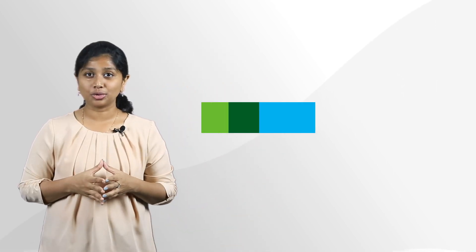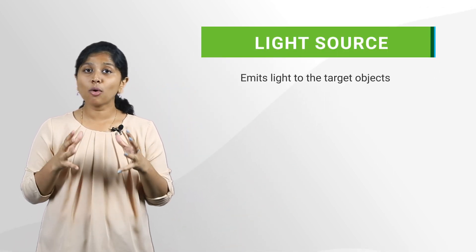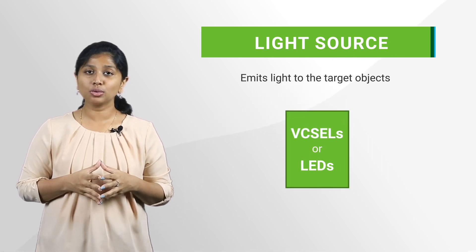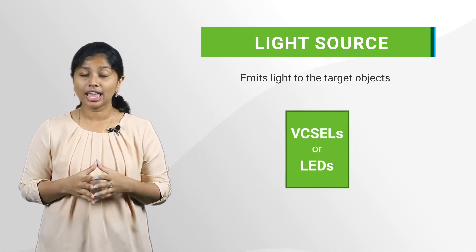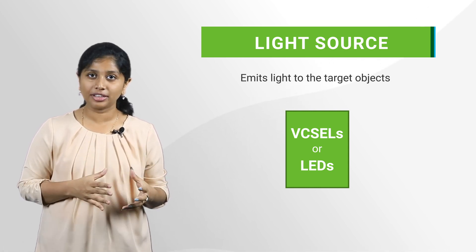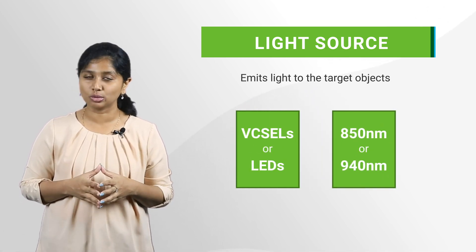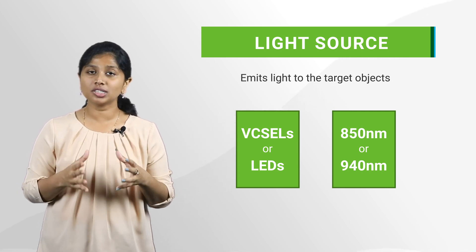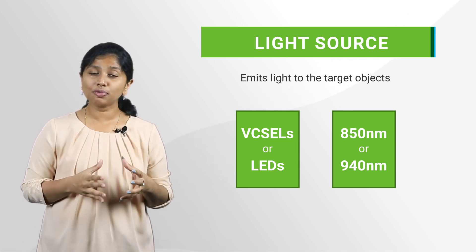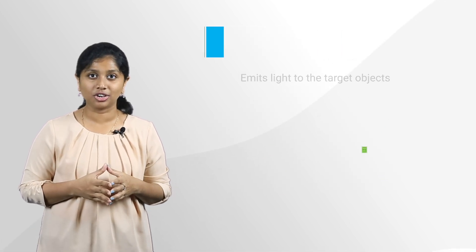The next component of the time-of-flight camera is the light source. As the term suggests, it emits light to the target objects. The most common types of light sources used are VCSELs or LEDs, and typically light in the near-infrared spectrum with a wavelength of either 850 nanometers or 940 nanometers is used. The VCSEL system uses a diffuser to ensure uniform surface illumination by diverging the light in front of the image sensor.